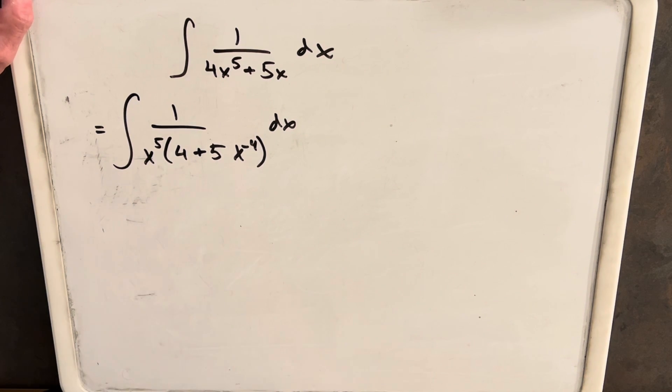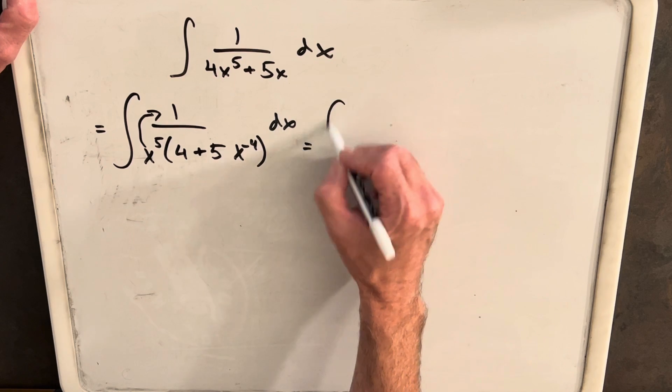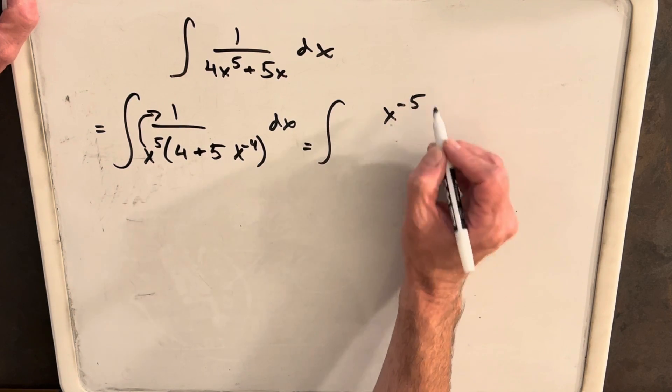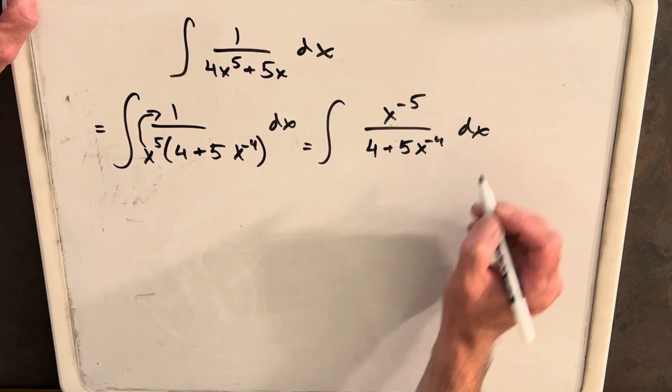And then what we want is we want to be able to do a u substitution. Let's bring this to the numerator. So then we'll write this as x to the minus 5th over 4 plus 5x to the minus 4th dx.